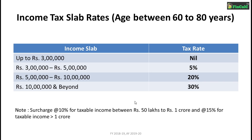For people whose age is between 60 to 80 years, the slab rates are: 0% for income less than ₹3 lakhs; 5% for income between ₹3 lakhs to ₹5 lakhs; 20% for ₹5 lakhs to ₹10 lakhs; and 30% for income greater than ₹10 lakhs. The same surcharge applies — 10% for income between ₹50 lakhs to ₹1 crore, and 15% for income greater than ₹1 crore.